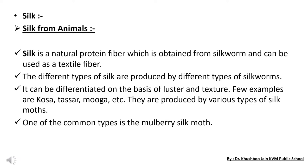Now we come to our second animal fiber, that is silk. Silk is a natural fiber which is obtained from an insect — the silk moth or silk worm. Silk is a natural protein fiber obtained from the silk worm. It is made up of protein and it is the strongest natural fiber. There are different types of silk worms and they produce different kinds of silk.